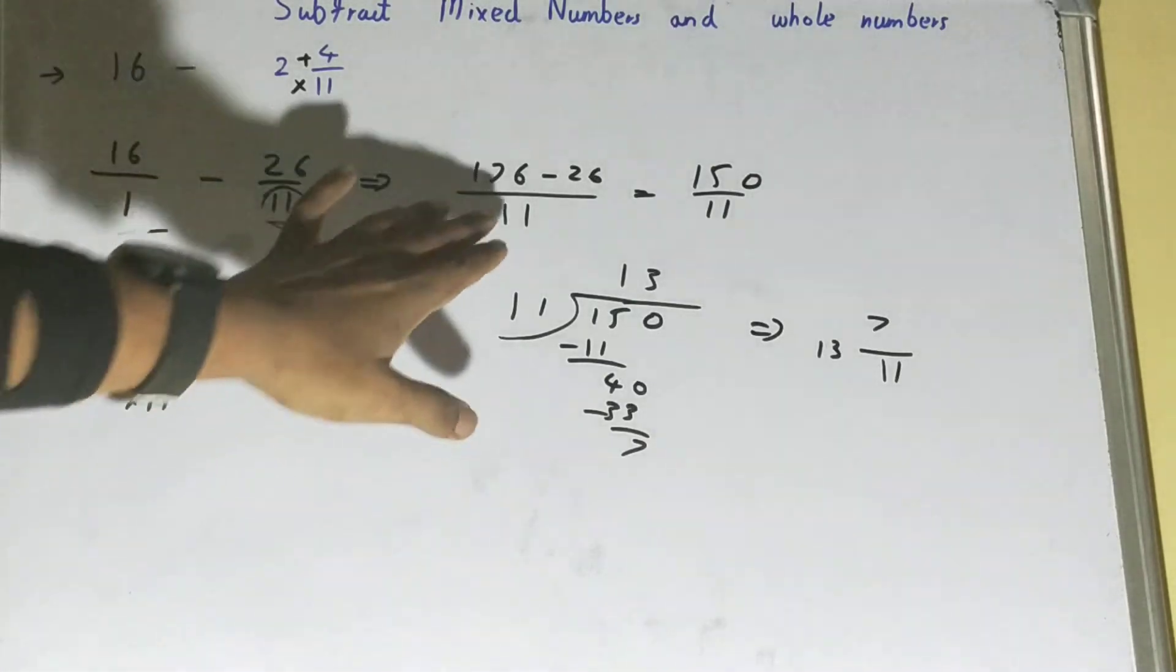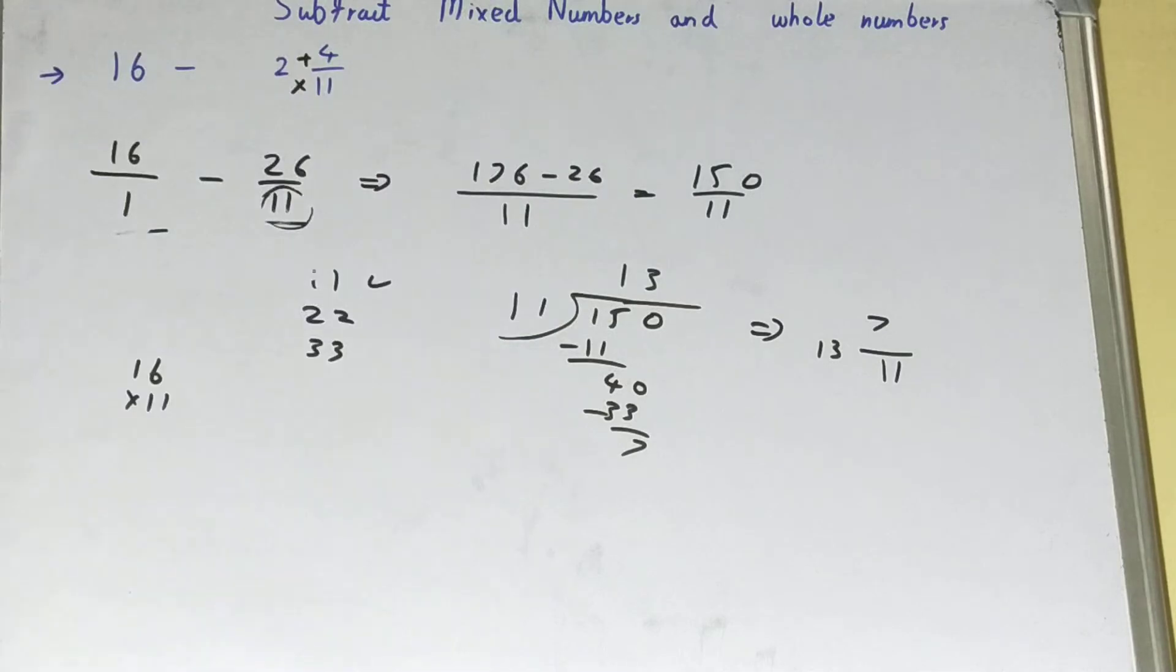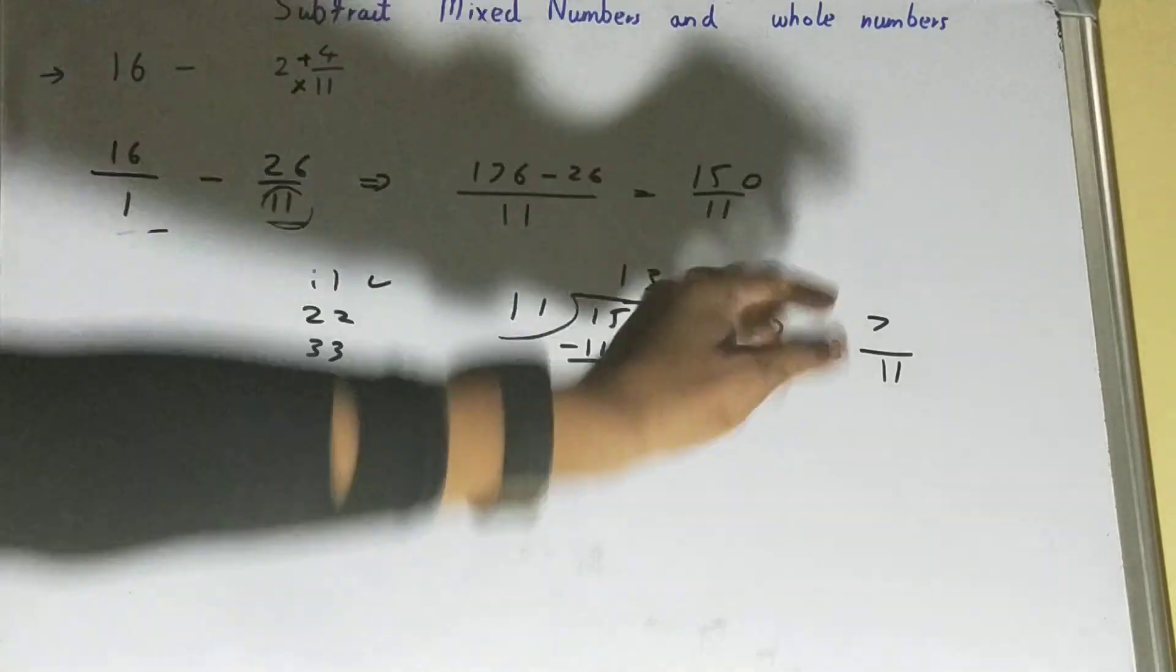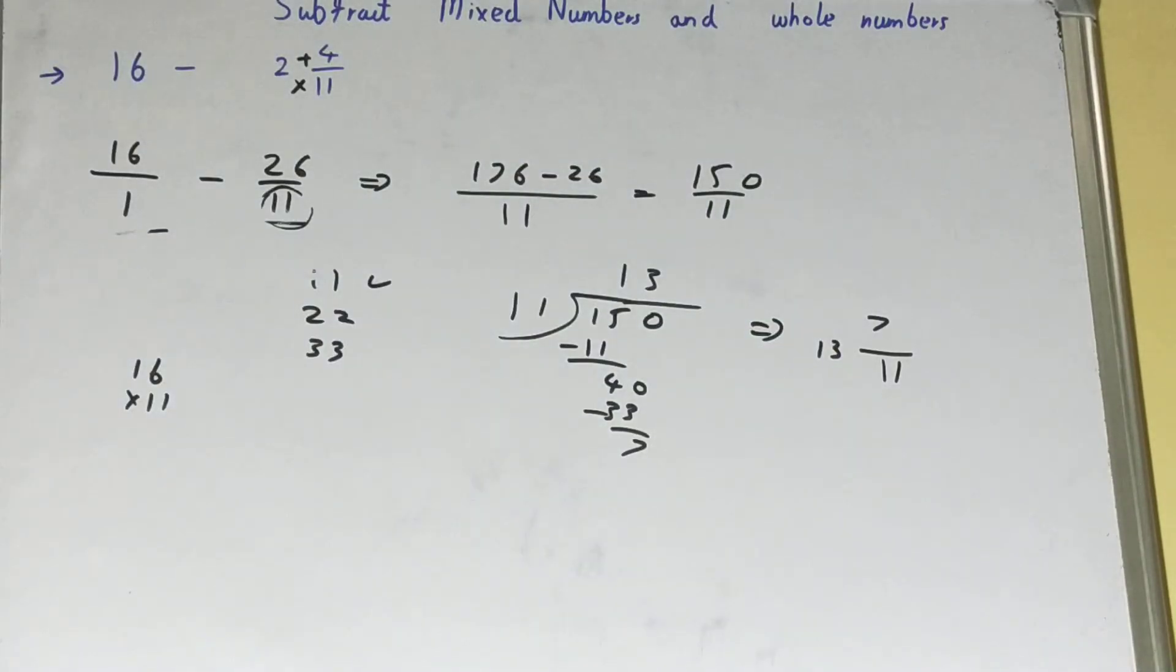Once you have the LCM, do the subtraction or addition, whatever they have asked. You get the final fraction and convert that back into your mixed number. And you'll be very quick with this as you practice more and more sums. It's not at all time taking.